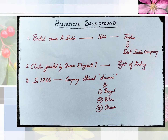The British came to India in 1600 as traders and formed the East India Company, which got the right of trading from Queen Elizabeth I, who passed the charter for trading. In 1765, the company obtained the Diwani rights of three territories: Bengal, Bihar and Odisha. Diwani right is a right through which revenue can be extracted from a region and civil justice can be given independently.